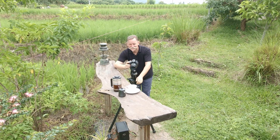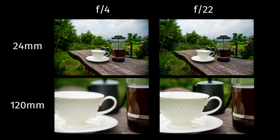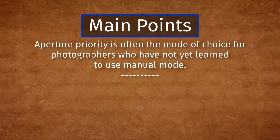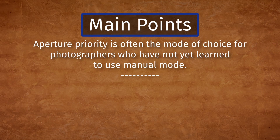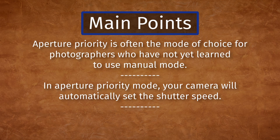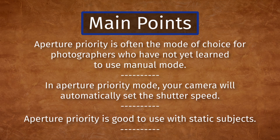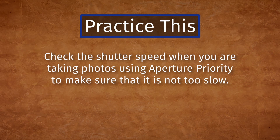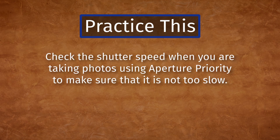Compare the photos on your computer. Look at the exposure and also at the depth of field — how much of each photo is in focus. Can you see the difference between the widest and narrowest aperture? The main points from this lesson are: aperture priority is often the mode of choice for photographers not yet using manual mode; in aperture priority mode your camera will automatically set the shutter speed; aperture priority is good for static subjects. Practice this to improve your photography, and check the shutter speed when using aperture priority to make sure it is not too slow.